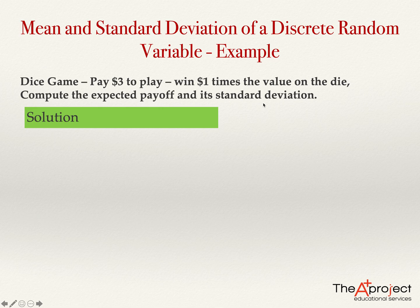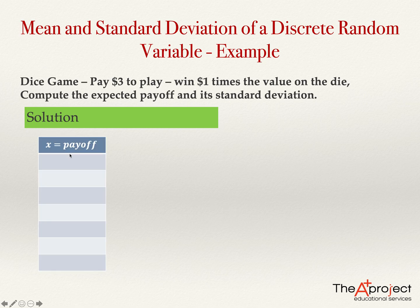To compute the expected payoff or the expected value of this random variable and its standard deviation, it will be a good idea to first see the probability distribution. The probability distribution requires you to list all the possible values and all their probabilities. The possible values are the payoffs, which will be the random variable.